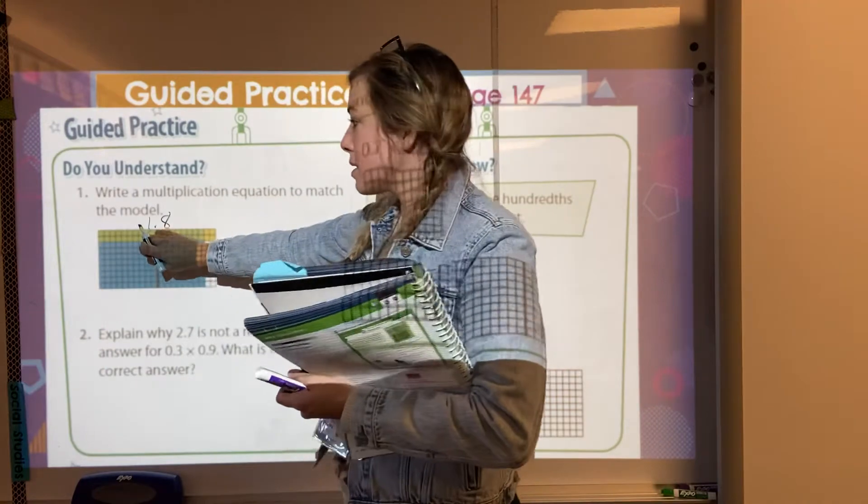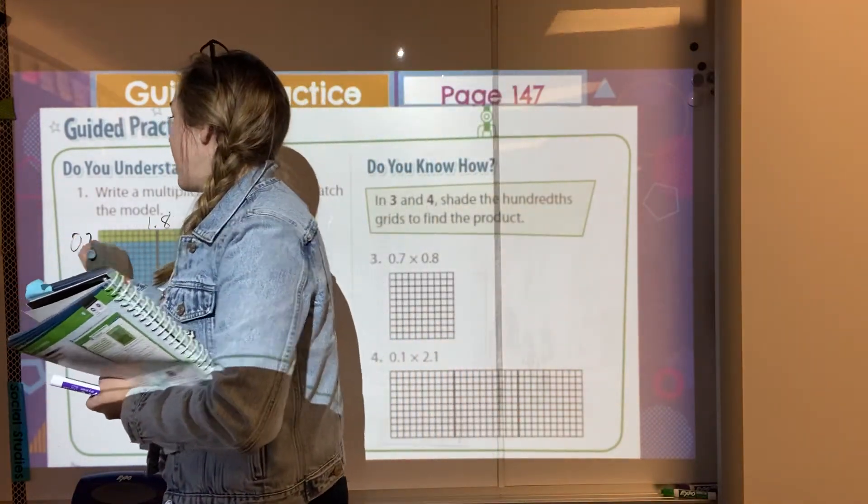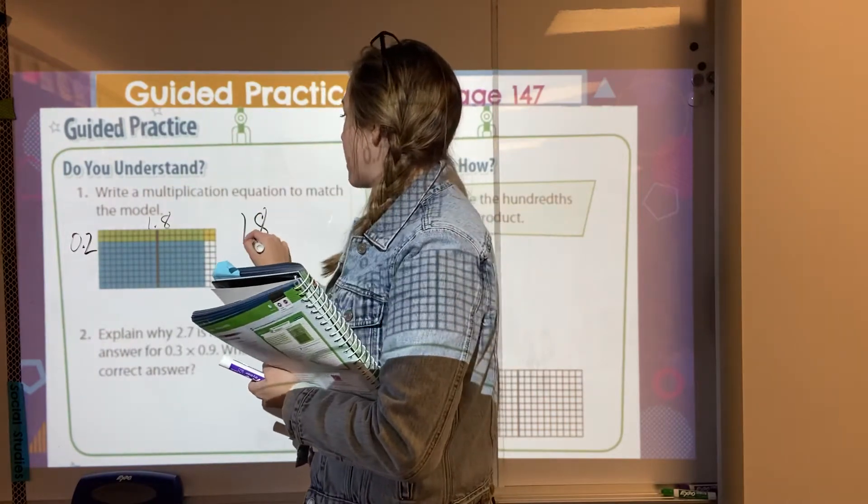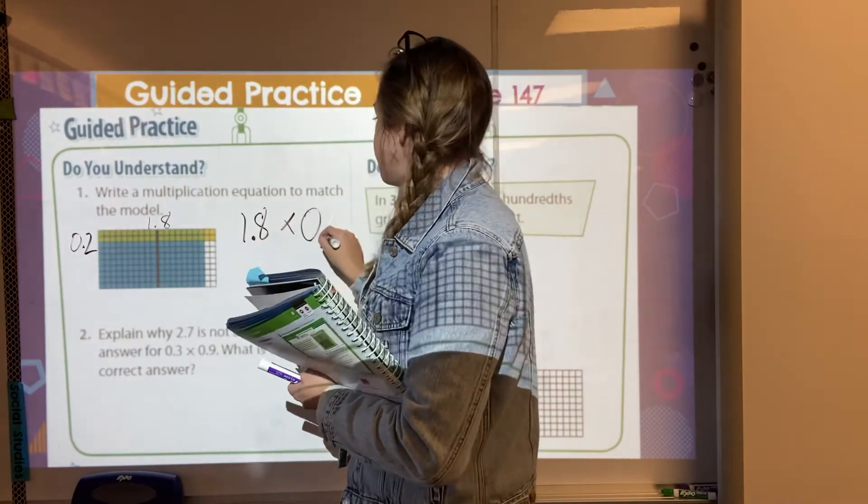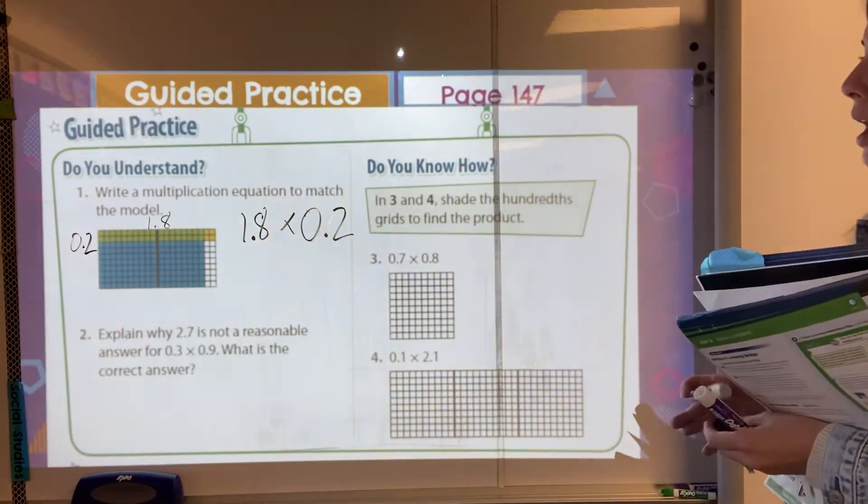So we're finding two tenths of this one whole and two tenths of the eight tenths. So this would be zero and two tenths. And so the equation we would come up with is one and eight tenths times two tenths.